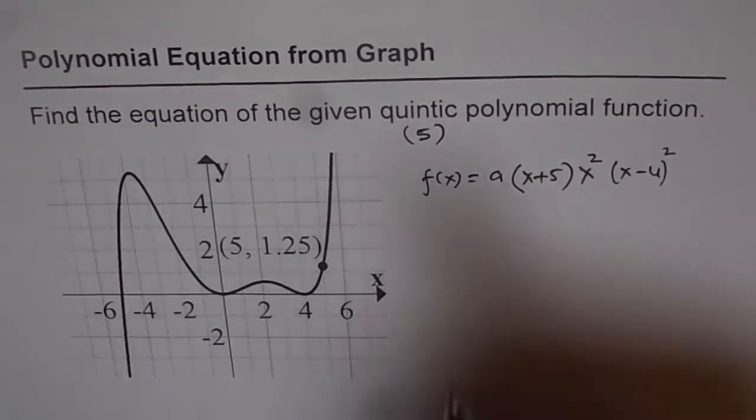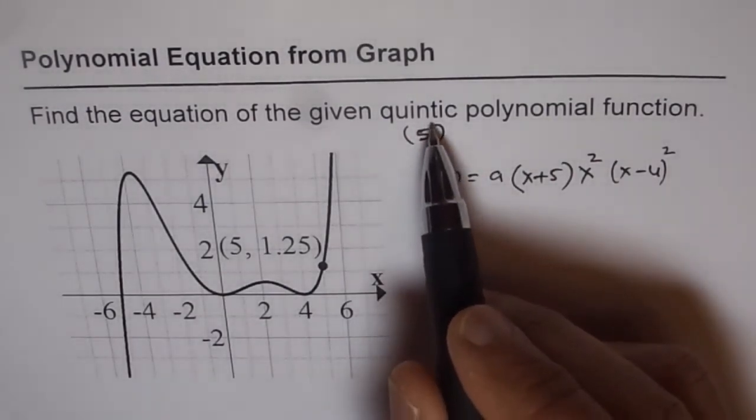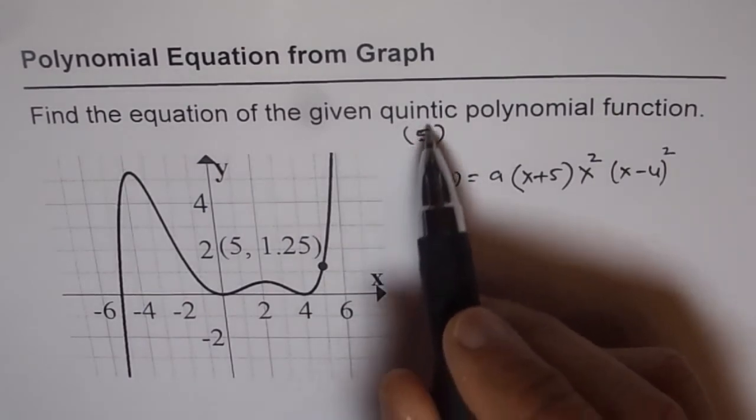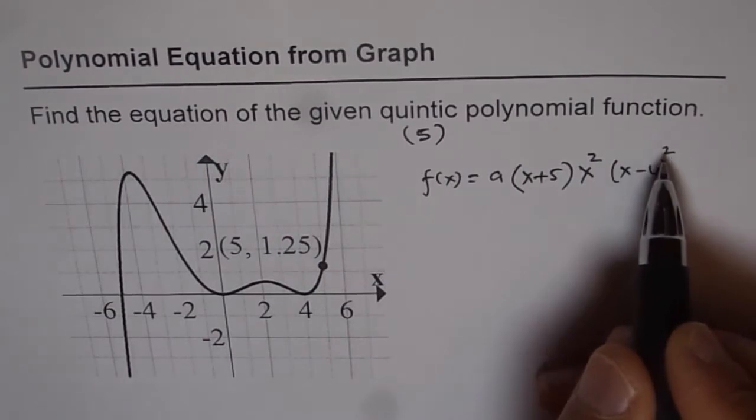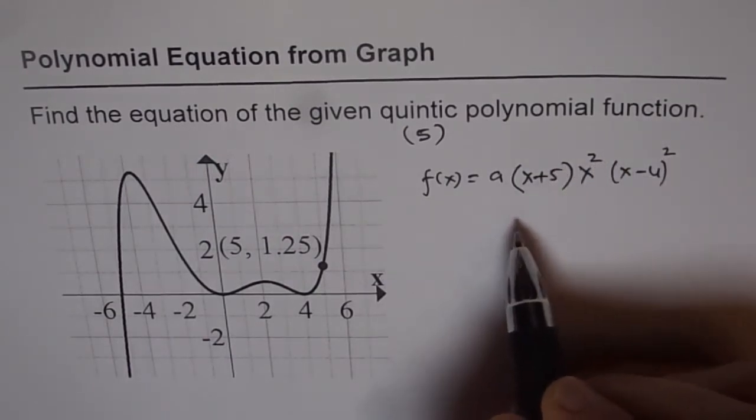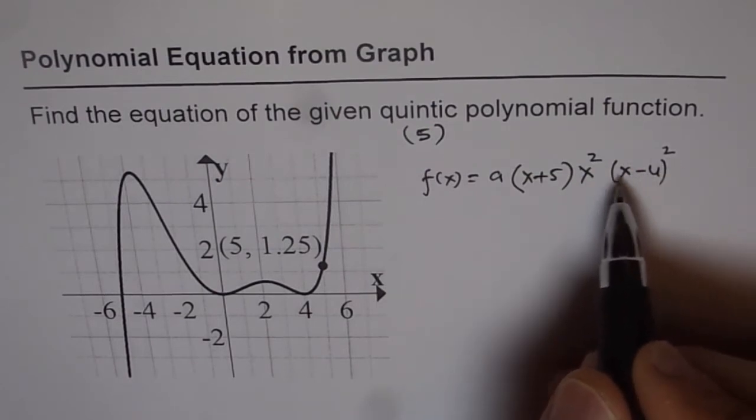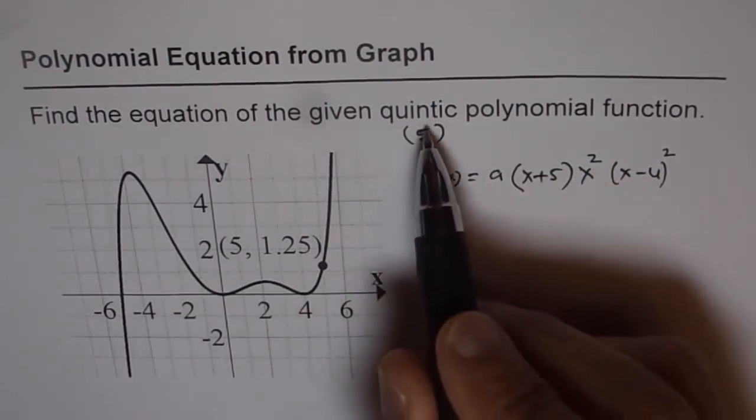If I would have given you a different degree, nonic for example, so degree 9. In that case you should have written these as different orders. Nonic means 4 and 4 is 8 and 1 is 9. So those exponents you have to match with given value.